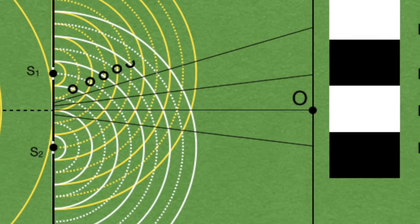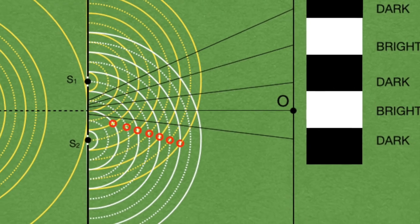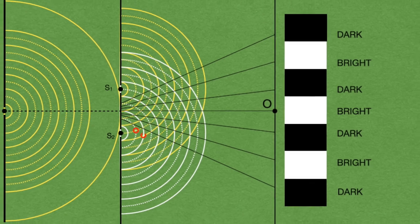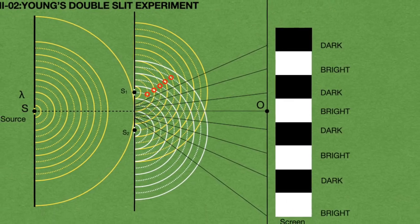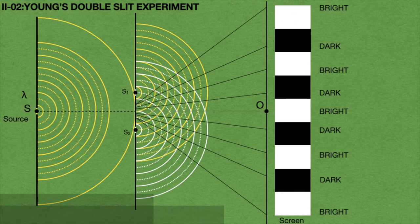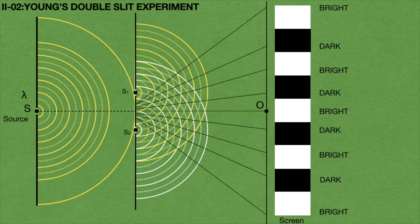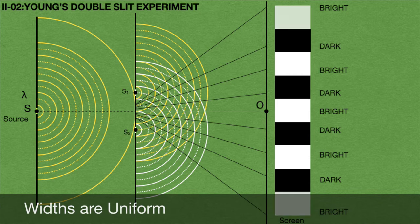In this fashion, constructive and destructive interference fringes are formed in all directions, giving bright and dark fringes successively on the screen. These fringes are called interference fringes, and this phenomenon is called interference. The interference fringe widths are uniform.